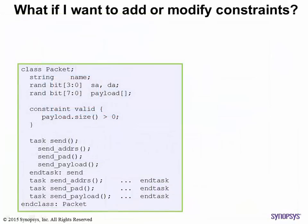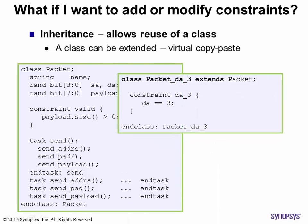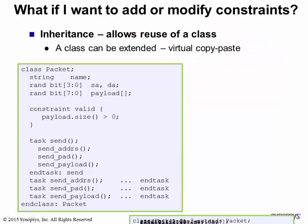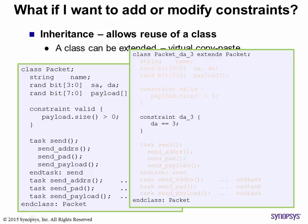One of the most common requirements of randomization is changing constraints. You can control randomization using inheritance. This allows you to extend a class — think of it as a virtual copy-paste. Everything in the original class is available in the extended class, and you only add your new constraints.